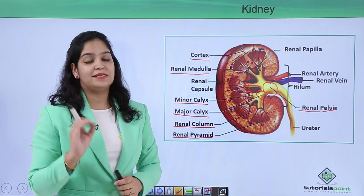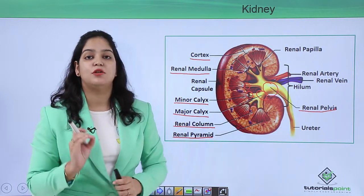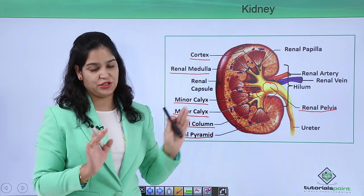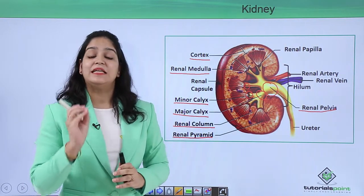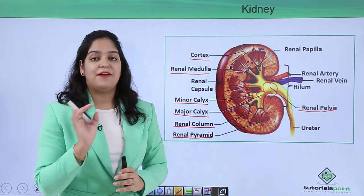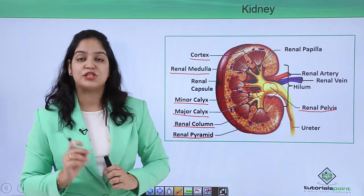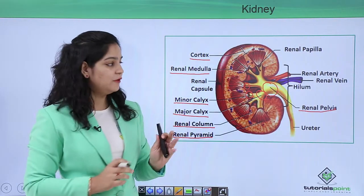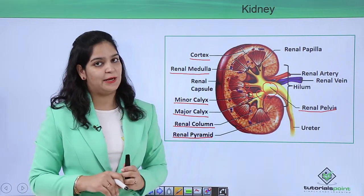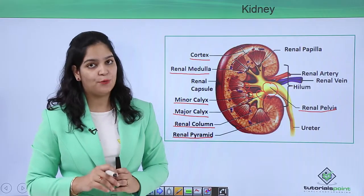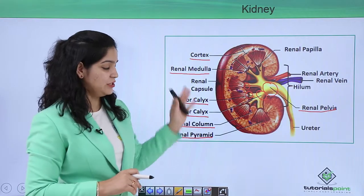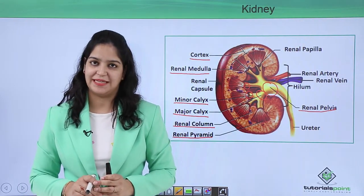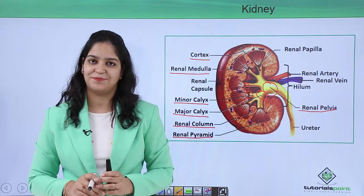A very important structure also present, though not visible in this picture, is the structural and functional unit of the kidney known as the nephron. In other videos we will learn about nephrons. I hope you understand this concept of the internal structure of the kidney. Thank you.